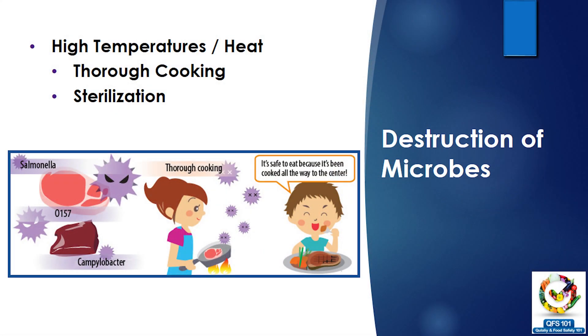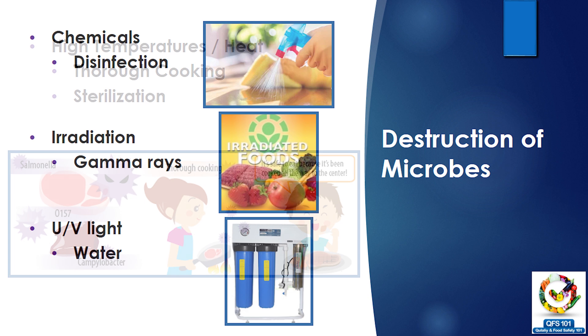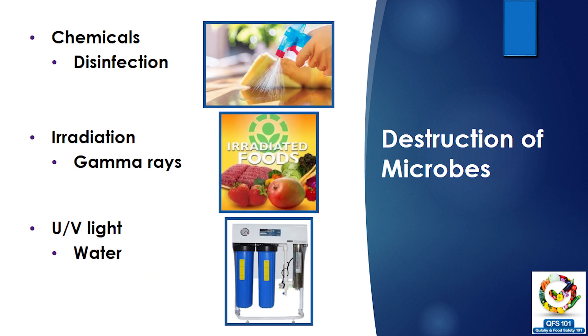How do we kill bacteria or destroy them? One of the easiest methods is thorough cooking, which kills microorganisms. Other methods are pasteurization and sterilization — all heat treatment methods through which we can kill microorganisms. Other methods include chemical sanitation, radiation such as gamma rays, and UV light, which is very common in UV filters where we reduce the quantity of microorganisms in water.